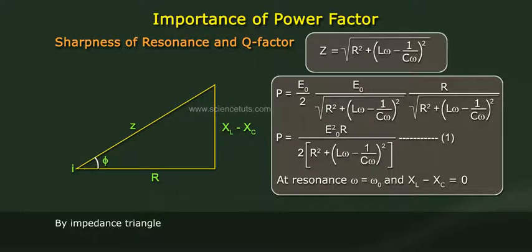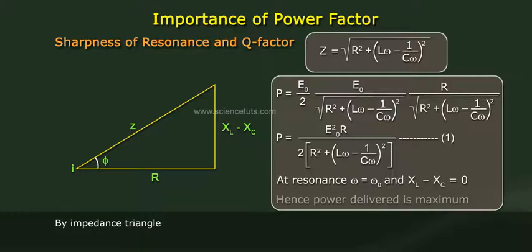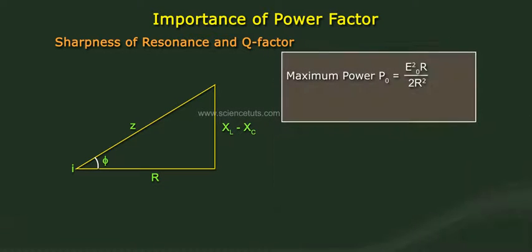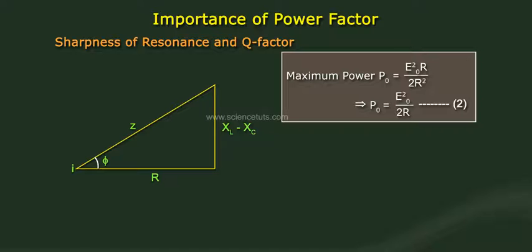At resonance, omega equals omega-naught and X_L minus X_C equals zero. Hence, power delivered is maximum. Maximum power P₀ equals E₀² divided by (2R). This is Equation 2.